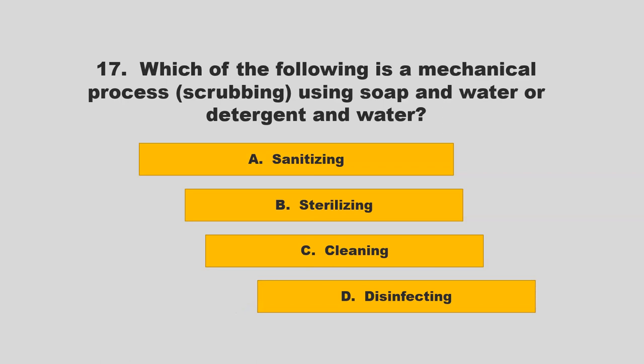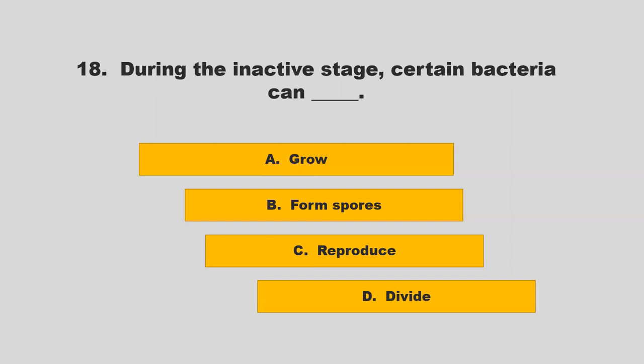Which of the following is a mechanical process of scrubbing using soap and water or detergent and water? Options: sanitizing, sterilizing, cleaning, or disinfecting. The correct answer is C: cleaning.